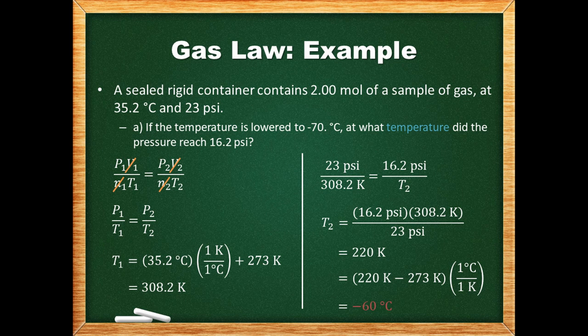-60 degrees Celsius is indeed within the temperature range we expected. Our temperature value in Kelvin was limited to 2 significant figures since one of the pressure values given was 2 sig figs. This meant it was good to the tens place, and as a result the value in degrees Celsius must be as well.